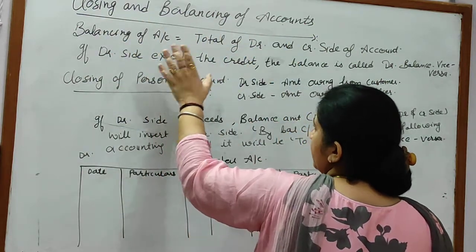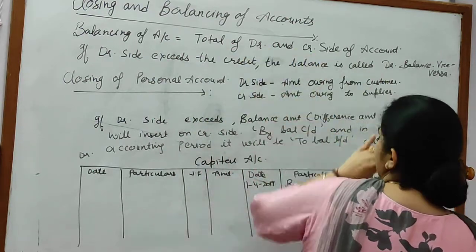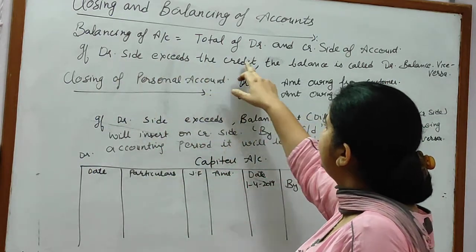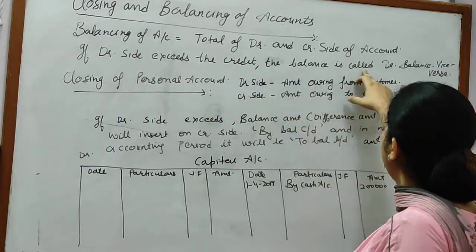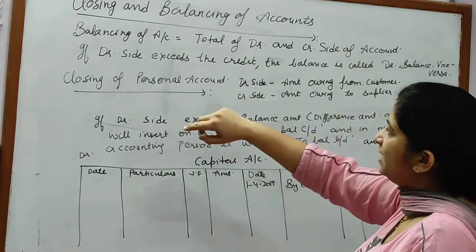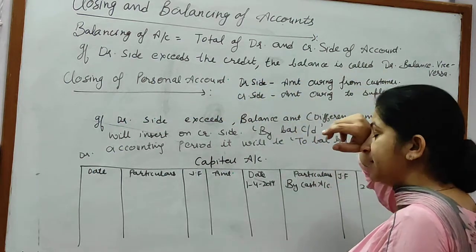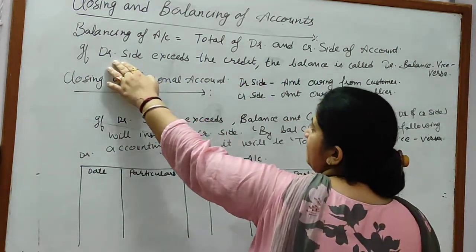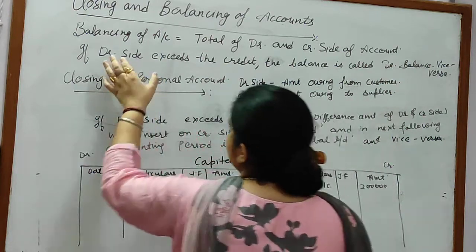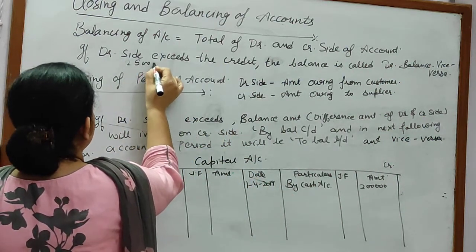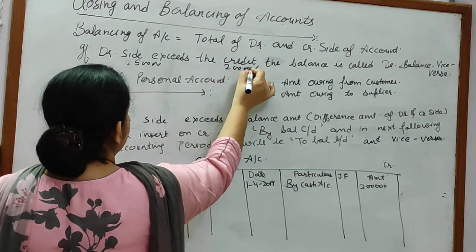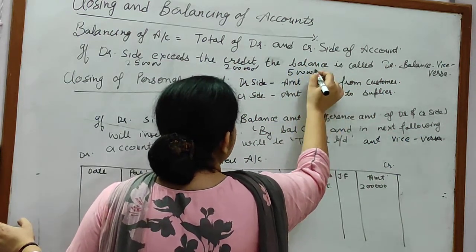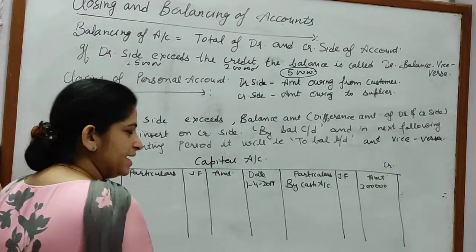Balancing of accounts: you have to find the total of the debit side and the credit side. If the debit side exceeds the credit, the balance is called debit balance. If the credit side exceeds the debit, the balance is called credit balance. For example, if debit side is two lakhs fifty thousand and credit side is two lakhs, the balance is fifty thousand — this is the debit balance.